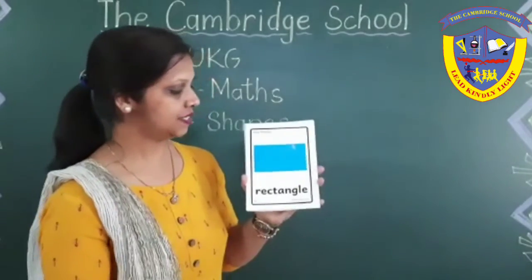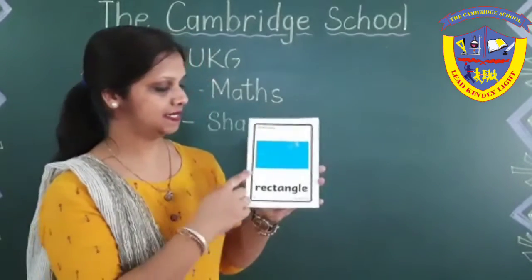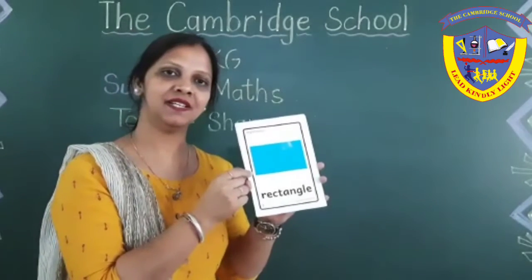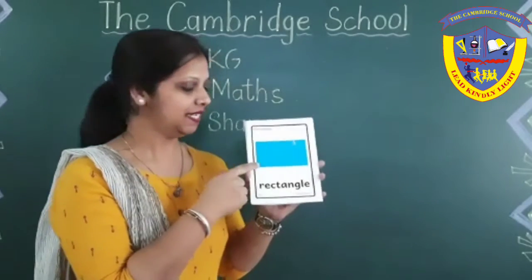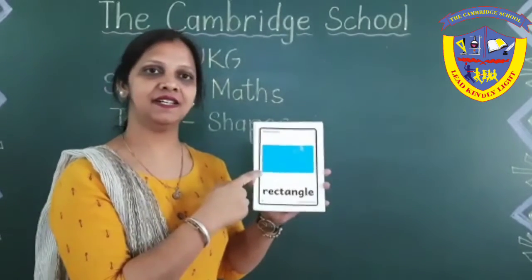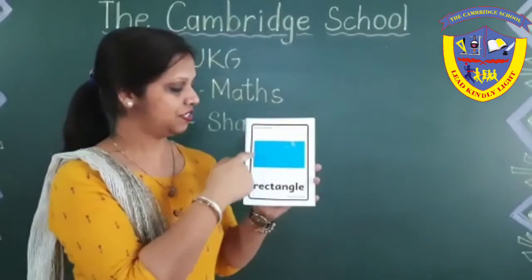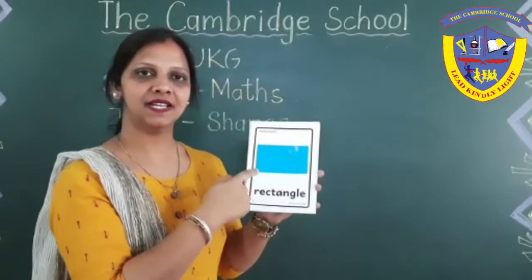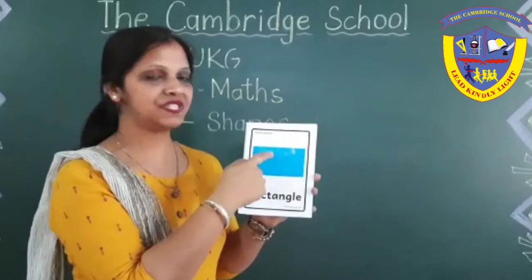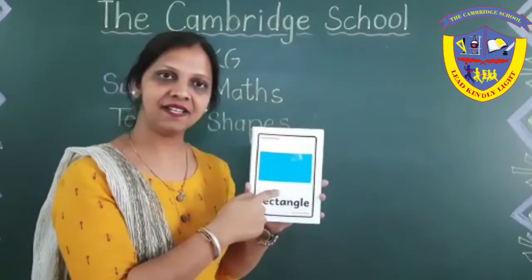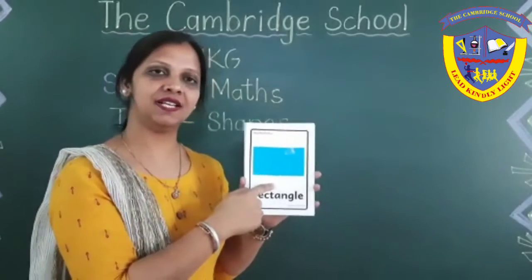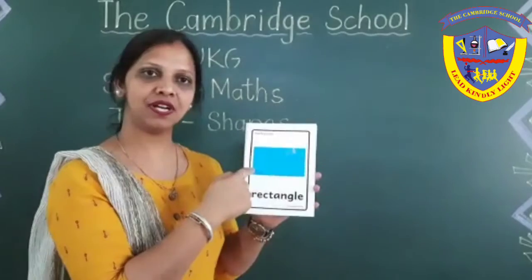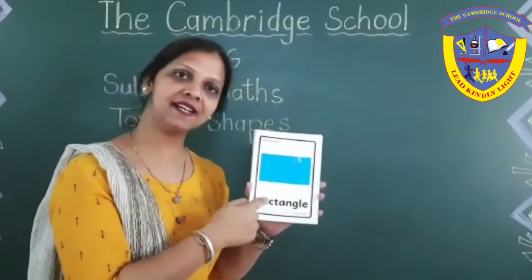And next shape is? Tell me. Rectangle. Which shape is this? Rectangle. Its opposite sides are equal. This is rectangle.